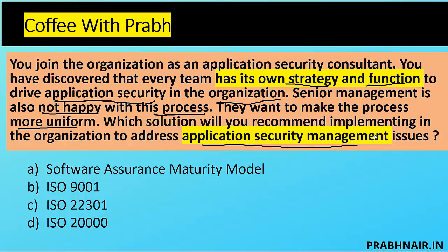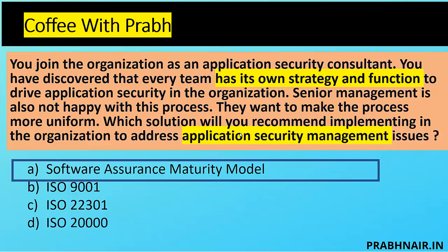Option A is SAMM — Software Assurance Maturity Model — an open framework that helps the organization formulate and implement a strategy for software security tailored to specific risks. SAMM helps evaluate existing software security practices, build a balanced security assurance program, and introduce measurable improvements. Option B, ISO 9000, is about quality, not security. Option C relates to ISO 22301, which is about BCMS, and ISO 20000 is about service management. The answer is A — SAMM — the framework companies adopt to build application security governance and use for gap assessment.